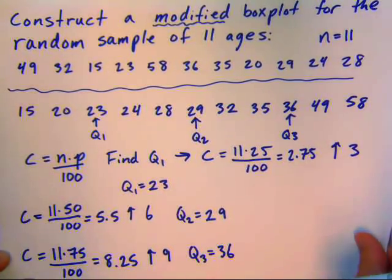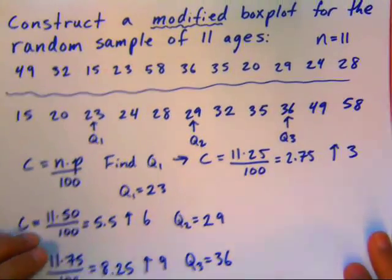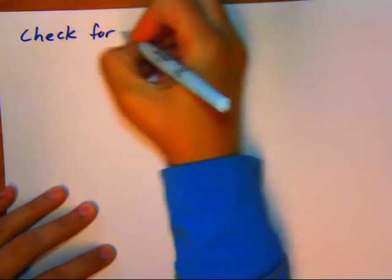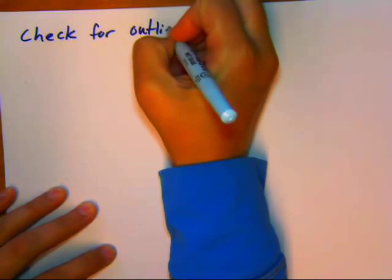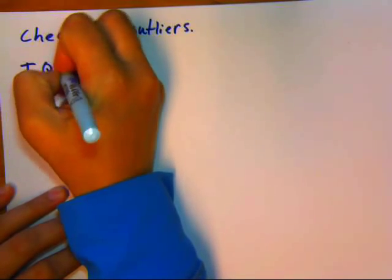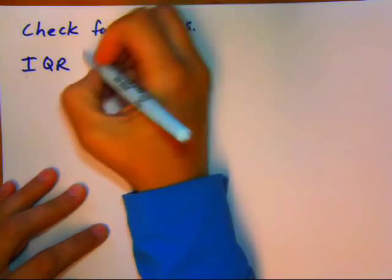To check for outliers, we're first going to find our interquartile range. Somewhat long words, so we're going to shorten that to IQR.